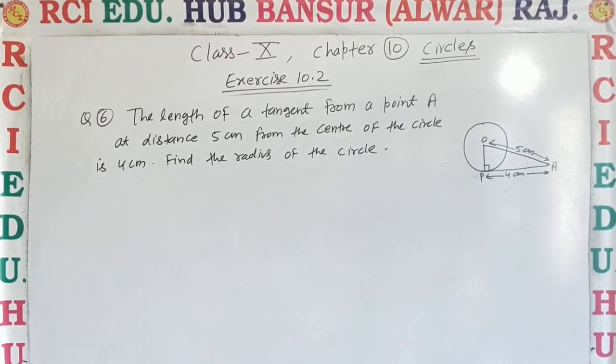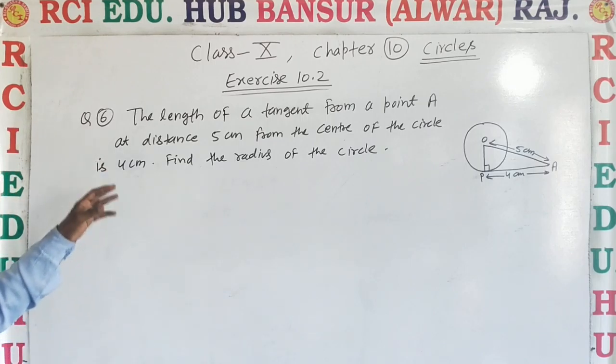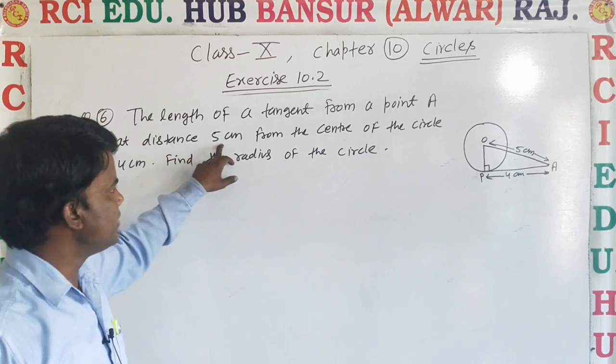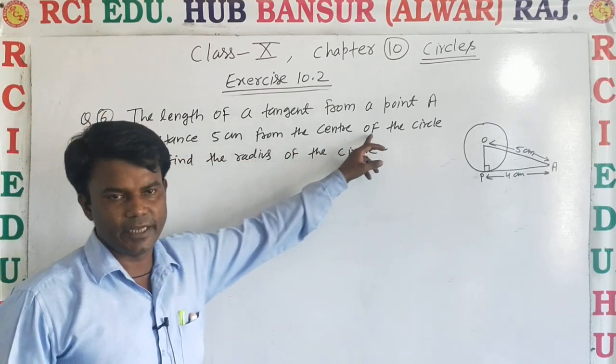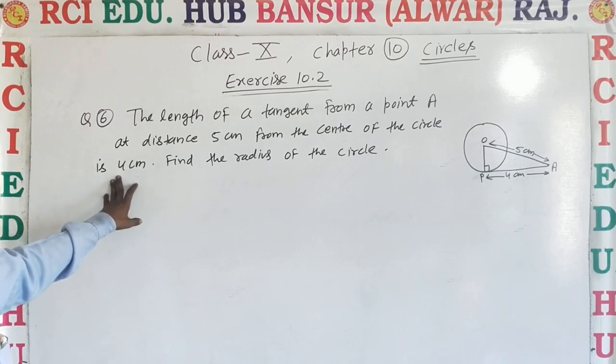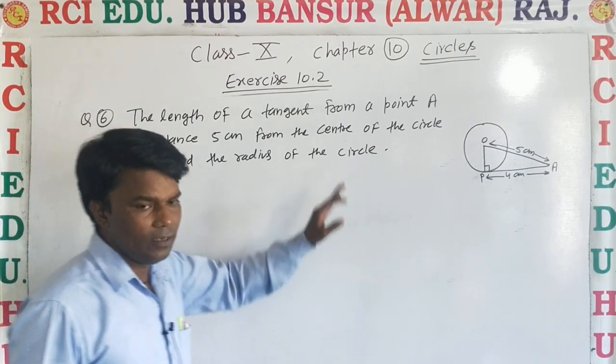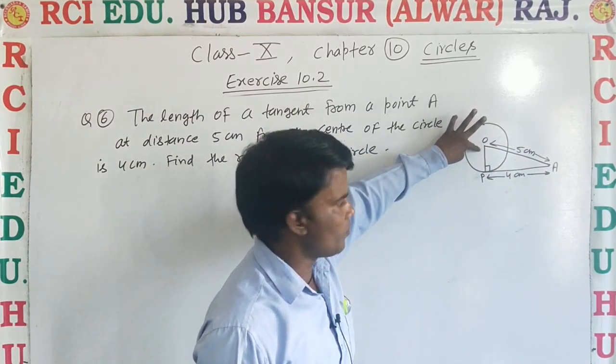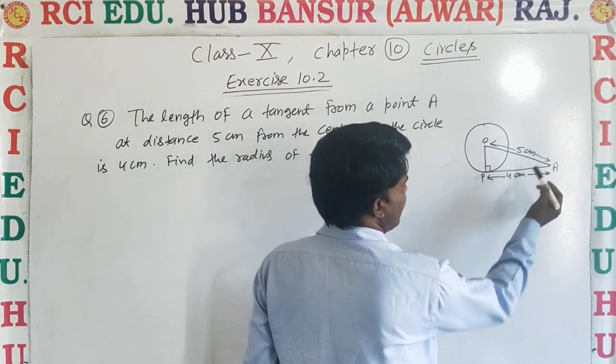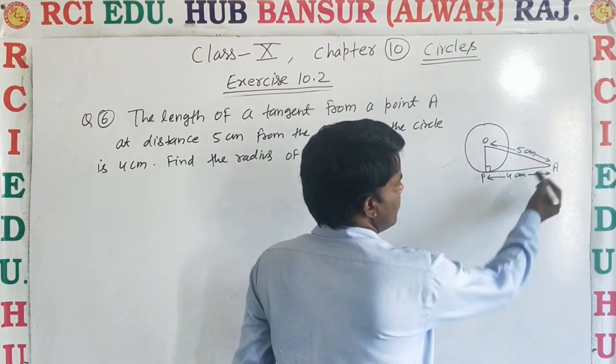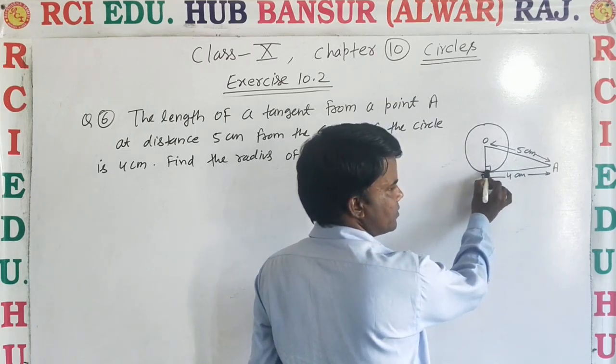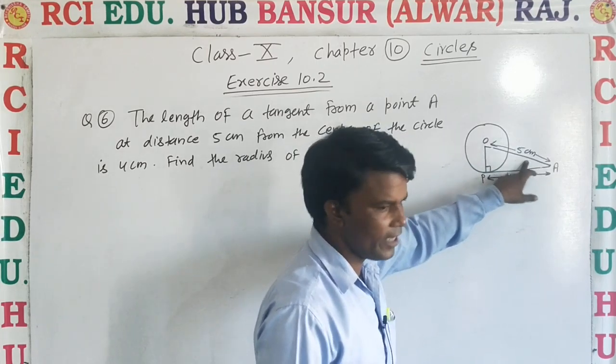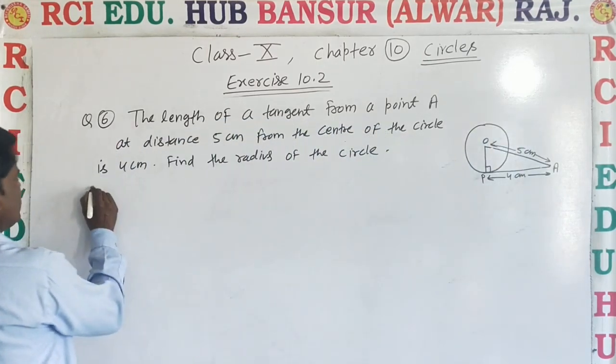After that, exercise 10.2 question number 6. The length of a tangent from a point at distance 5 cm from the center of the circle is 4 cm. Find the radius of the circle. In the diagram, circle has center point O, and tangent is PA. This is external point A, and point of contact which is tangent has distance 4 cm, and center point is 5 cm. Then, this is the solution.